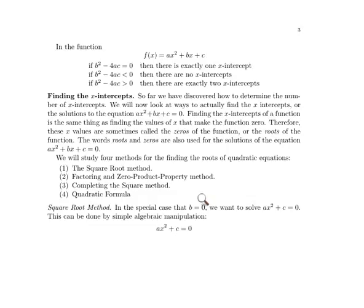If b equals zero, then we've got ax squared plus c equals zero, and we can solve for x by subtracting c from both sides, dividing both sides by a, and then taking the square root of both sides. Let's look at those details.